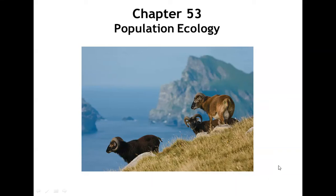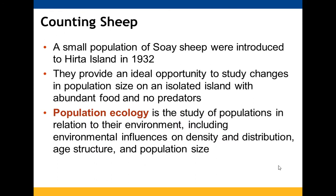Chapter 53 focuses on population ecology. The picture shows sheep introduced on Hirta Island in 1932. Because it was a smaller, isolated population with plenty of food and no predators, it gave scientists an opportunity to study population size changes. We talked about population ecology in the previous chapter, looking at populations in relation to their environment and how that can influence their density.